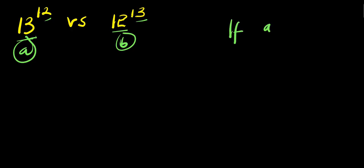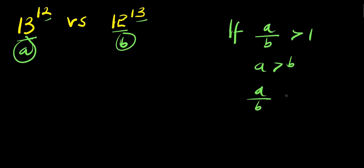So if a divided by b gives us a number that is greater than 1, that means a is greater than b. And also if a divided by b gives us a number that is less than 1, that means a is less than b.